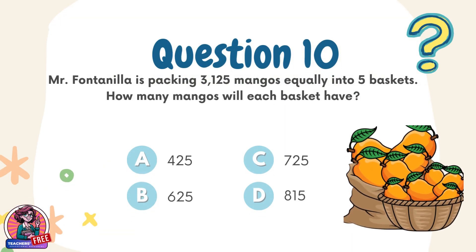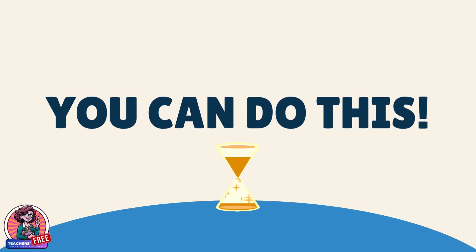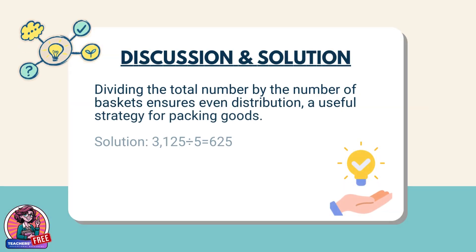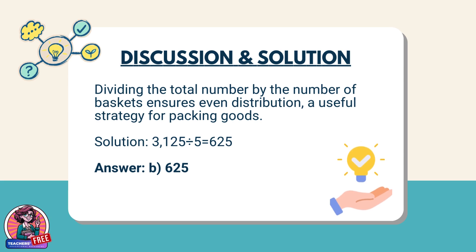Question 10. Mr. Fontanilla is packing 3,125 mangoes equally into 5 baskets. How many mangoes will each basket have? Choices: A. 425, B. 625, C. 725, D. 815. Discussion: Dividing the total number by the number of baskets ensures even distribution, a useful strategy for packing goods. Solution: 3,125 ÷ 5 = 625. Answer: B. 625.